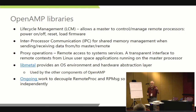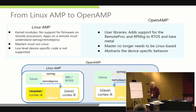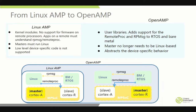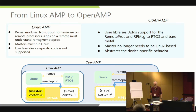We're ongoing trying to decouple the Remote Proc and RP Message implementations to allow selecting one or the other for constrained environments. Linux AMP had no support for firmware on remote processors, required Linux, and included low-level device code. OpenAMP is now user-land libraries instead of a kernel module, adds support for more constrained OS environments, no longer needs to be Linux-based, and with lib metal provides an abstraction layer to the hardware that allows portability of the application-layer-specific code across different kinds of processors.